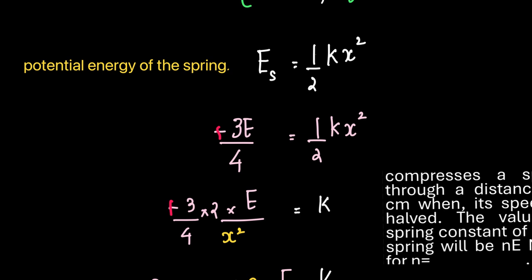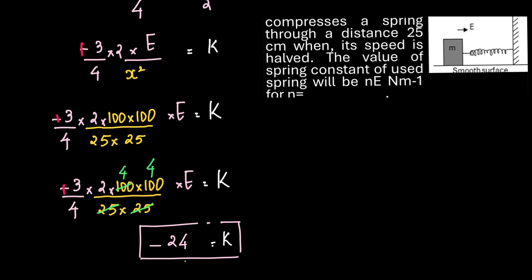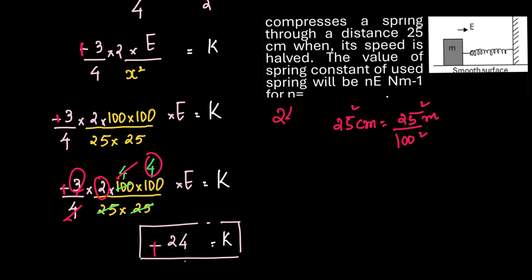We have ½kx² = 3E/4, so k = (3E/4)·(2/x²) = 3E·2/(4x²). The value of x is 25 cm = 25/100 m. So x² = (25/100)² in the denominator, giving (100/25)·(100/25) = 4·4 = 16 divided by the factor of 4 from the denominator, and combined with the remaining factors gives k = 24E.